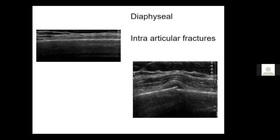Traditionally, people thought you couldn't ultrasound bone, which is true — there's no image beyond the bone cortex. But when the bone becomes abnormal, it becomes replaced with fluid or soft tissue, which ultrasound is excellent at.